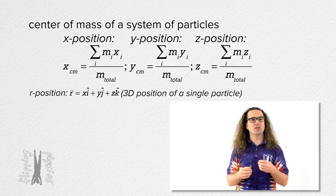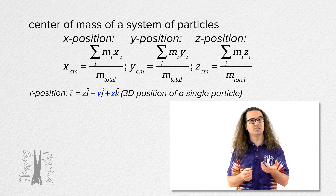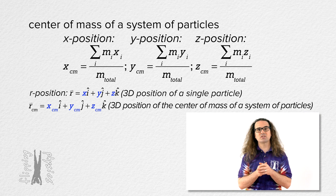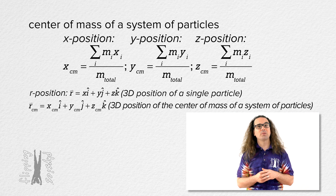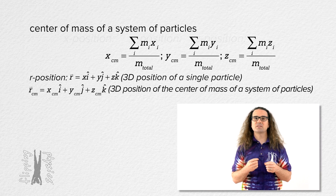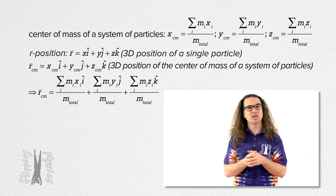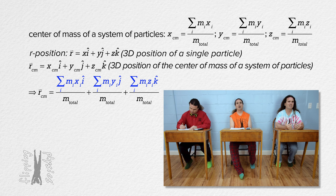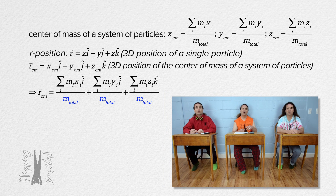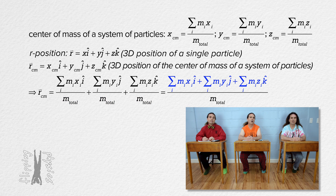And rather than identifying the location of a single particle, we can replace each of those x, y, and z position variables with the respective center of mass of a system of particles equations instead, and identify the three-dimensional position of the center of mass as the x-position center of mass times unit vector i, plus the y-position center of mass times unit vector j, plus the z-position center of mass times unit vector k. For each of the position center of mass equations, with the sum of the i-th particle's mass times the i-th particle's position times a unit vector, each divided by the total mass, they all have total mass in the denominator, so we can combine all those terms.